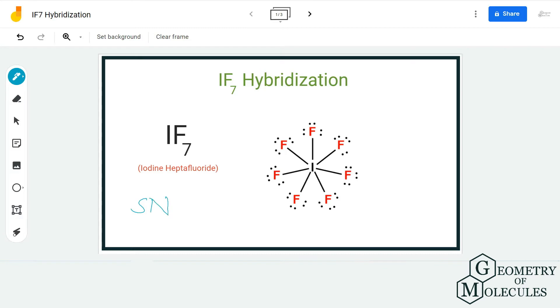To start, we first look at the Lewis structure because it helps us know the number of bonding pairs and non-bonding pairs of electrons on the central atom. If you look at this molecule, the iodine atom is forming seven bonds with seven fluorine atoms and there are no lone pairs on the central atom.